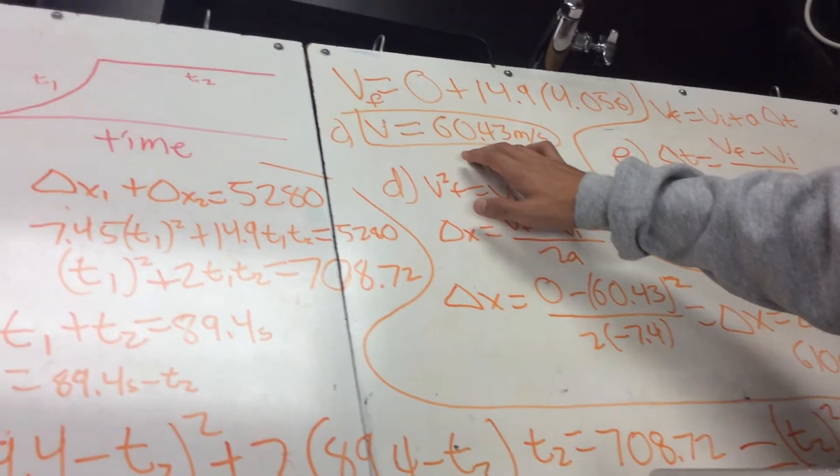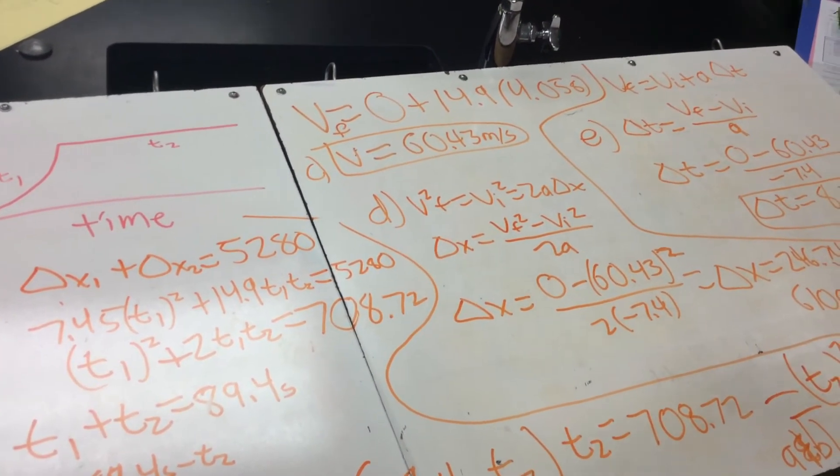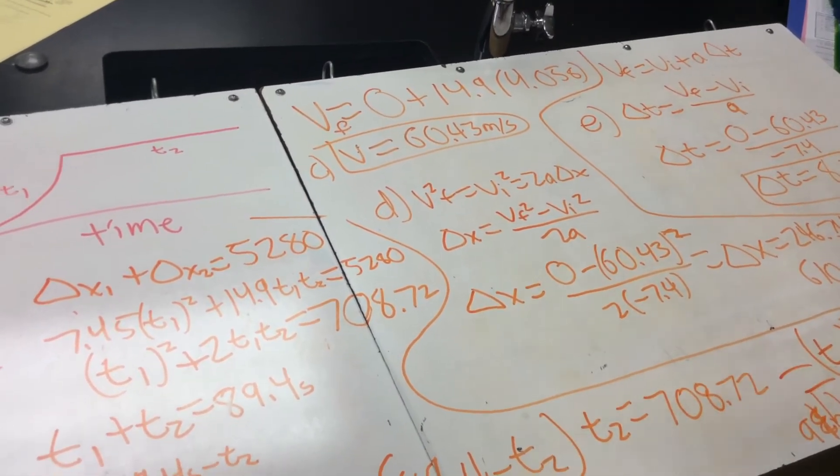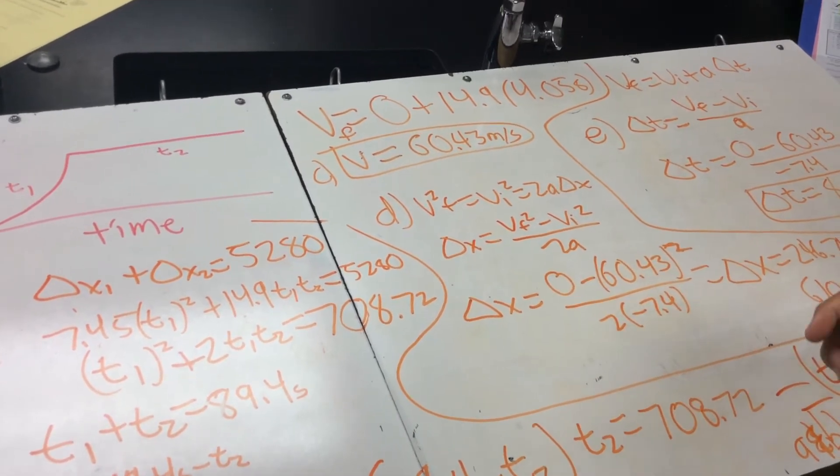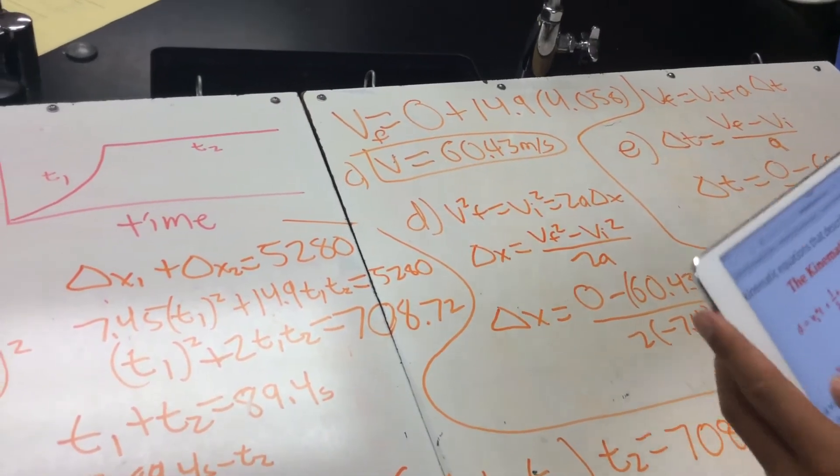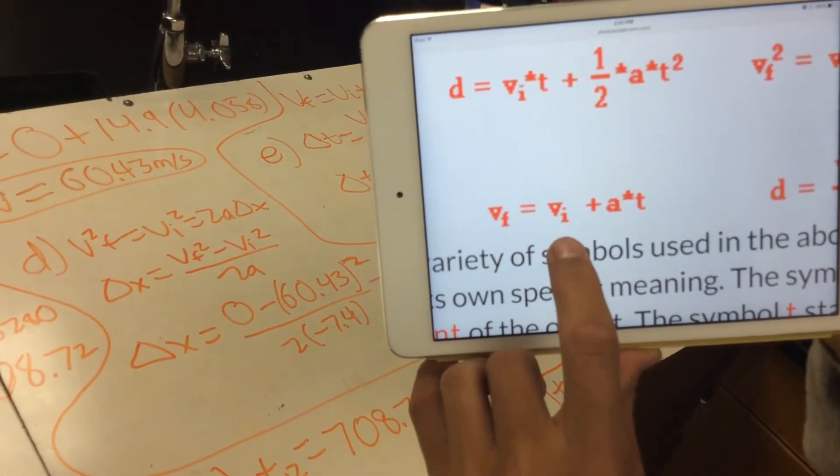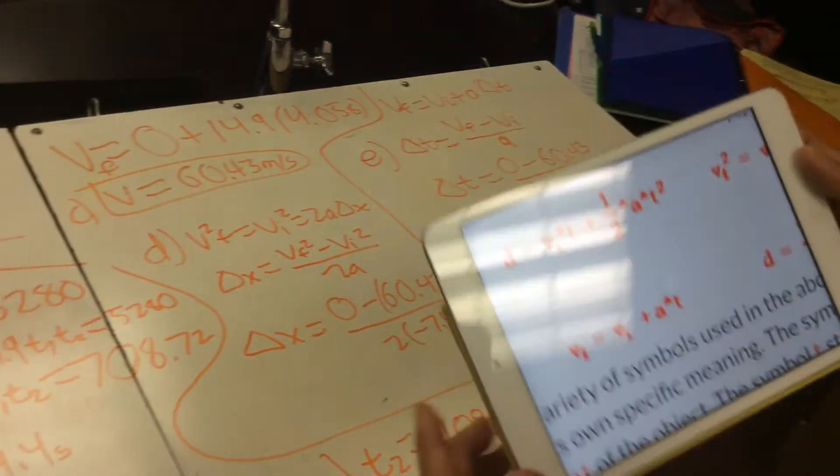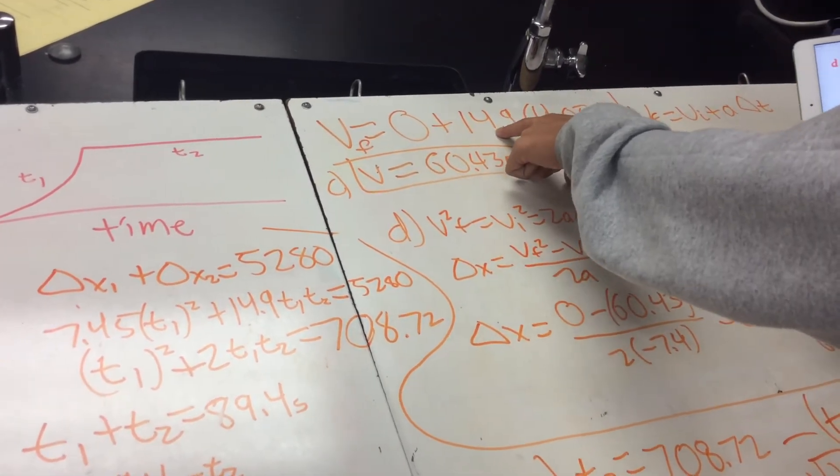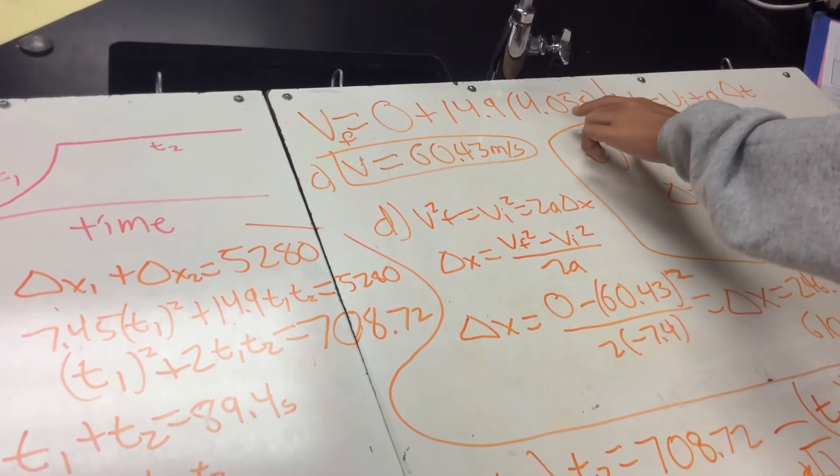So for part C, we're using another kinematic equation. Part C asks for velocity. So we're using this kinematic equation right here. Velocity final equals velocity initial plus acceleration times time. So velocity initial was 0, because it started from rest. The acceleration is 14.9. And the time, we're using the time from, we're using t1 for the time.